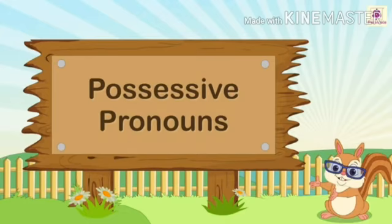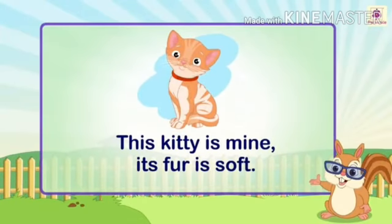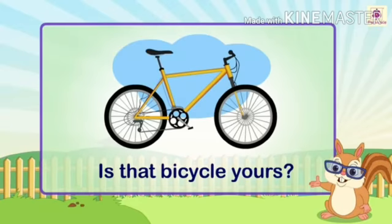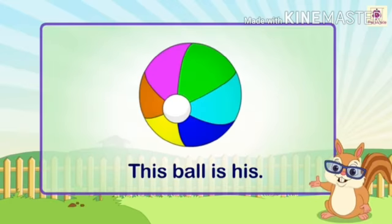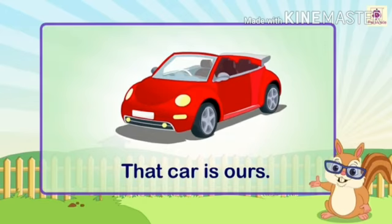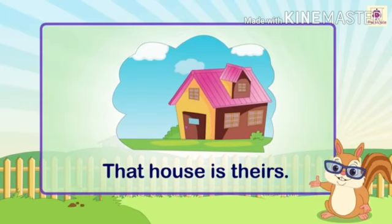Now, let's see the next pronoun that is possessive pronoun. Let's understand with examples first. Here is the example. This kitty is mine. Its fur is soft. Next example. Is that bicycle yours? This ball is his. That dress is hers. That car is ours. That house is theirs.